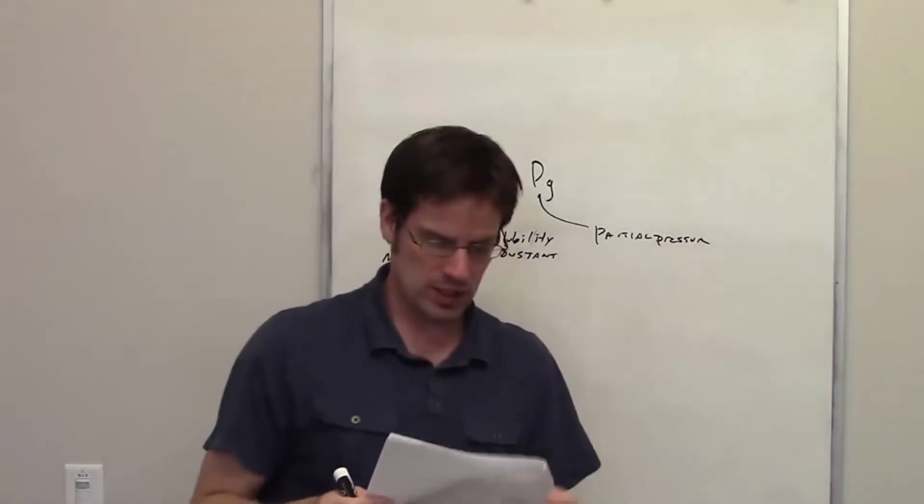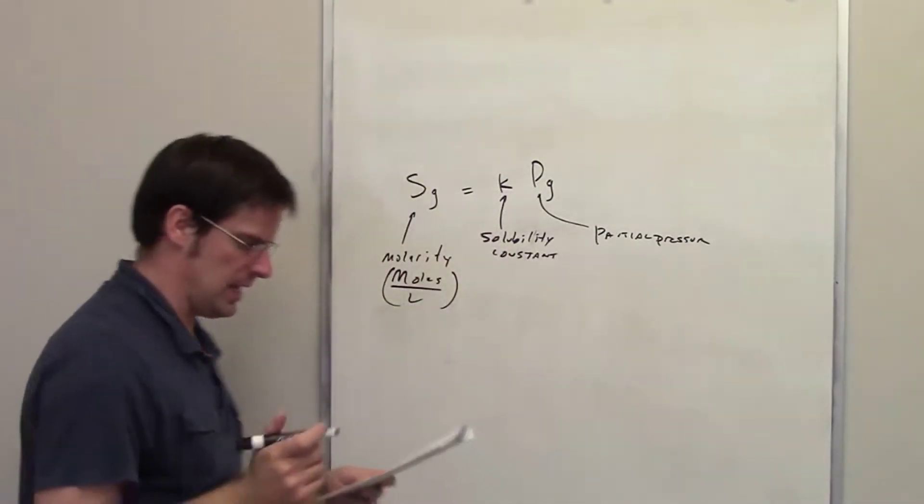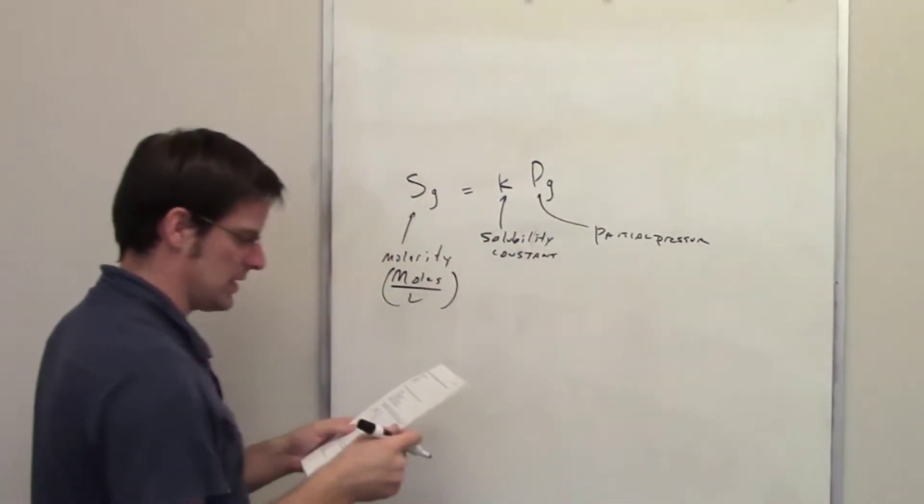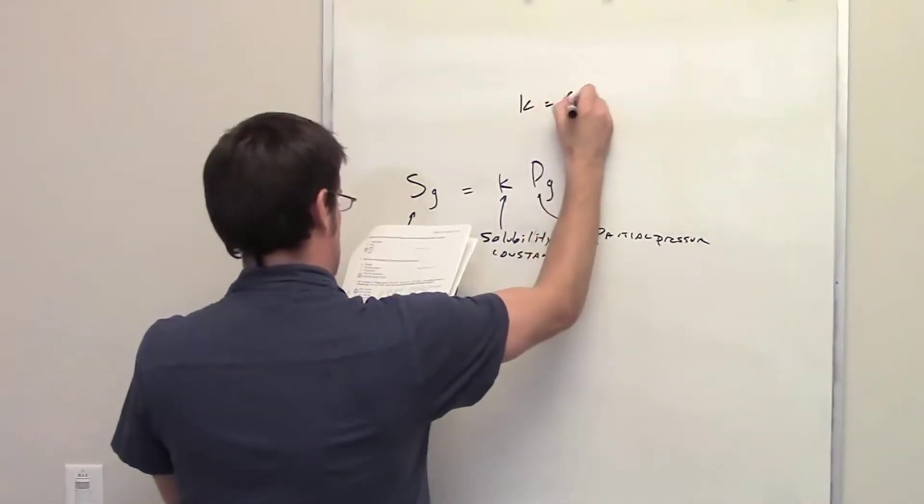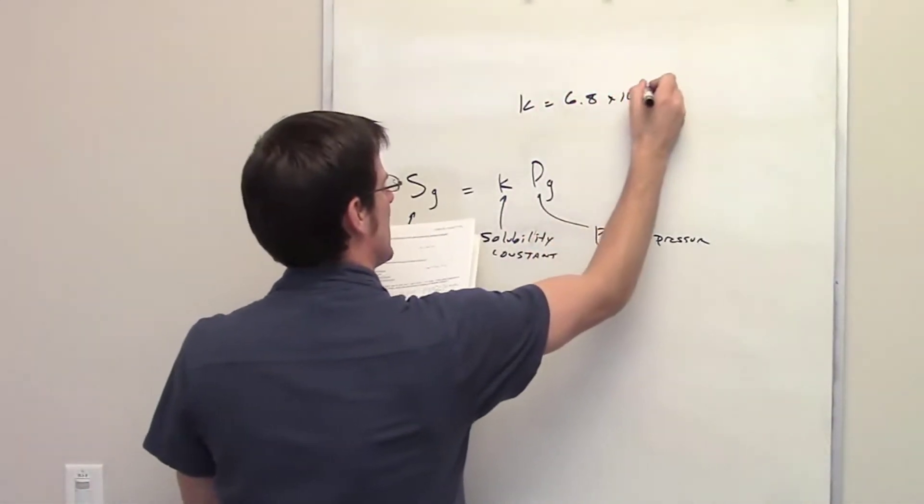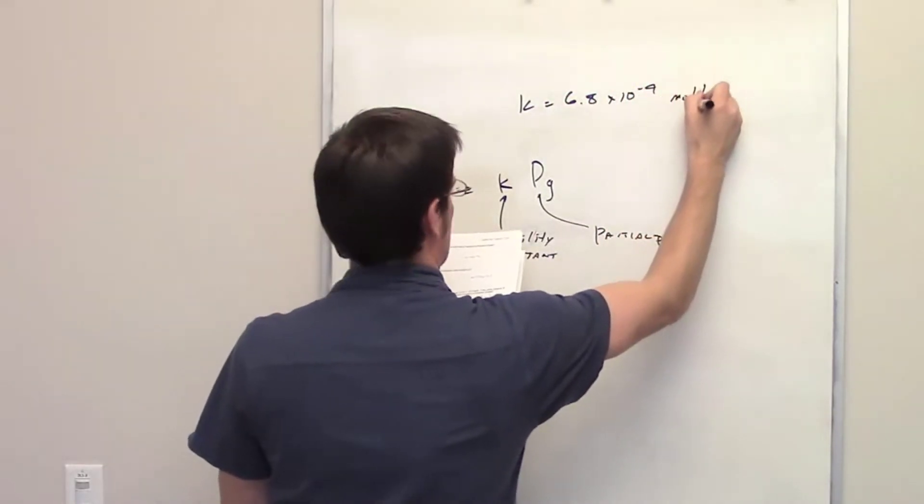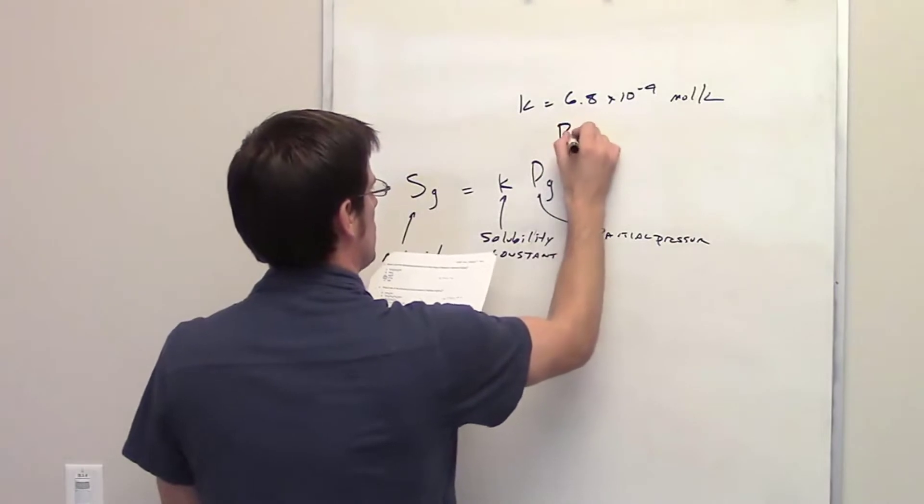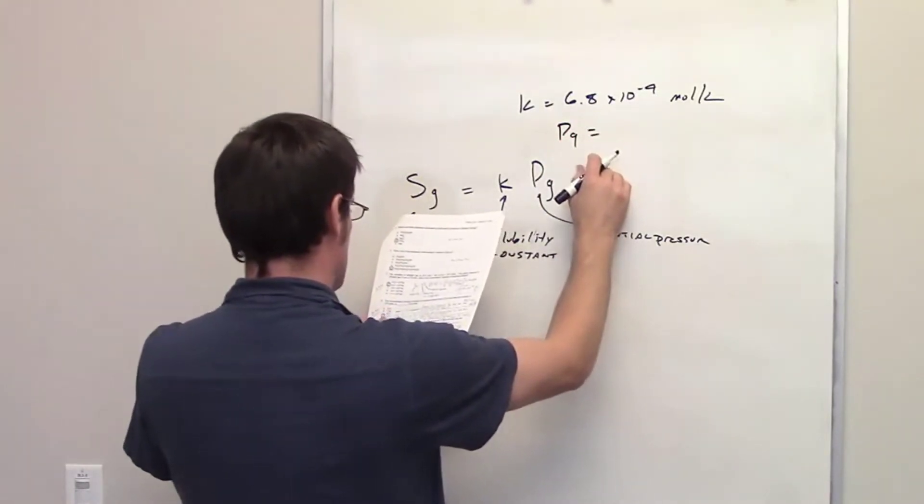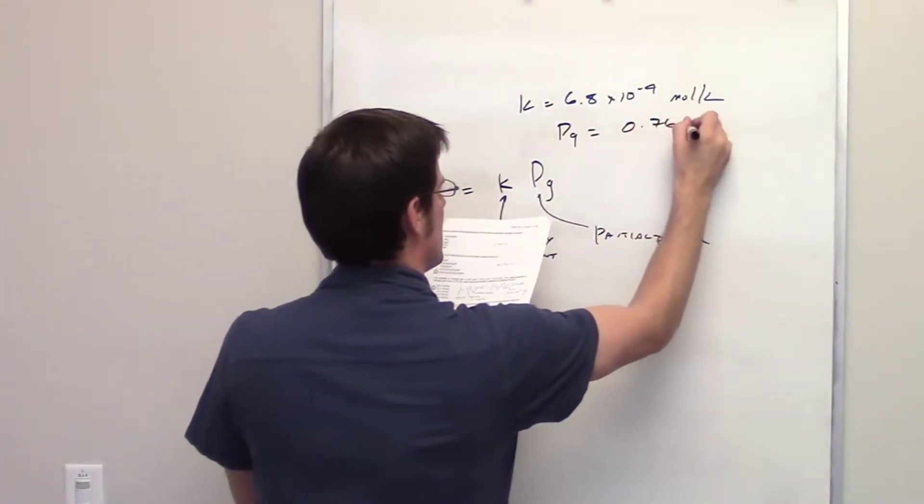So in this question it tells us that the solubility of nitrogen gas at 25 degrees Celsius and 1 atmosphere pressure is equal to 6.8 times 10 to the negative 4th moles per liter. It tells us also that the partial pressure, p sub g, is equal to 0.76 atm.